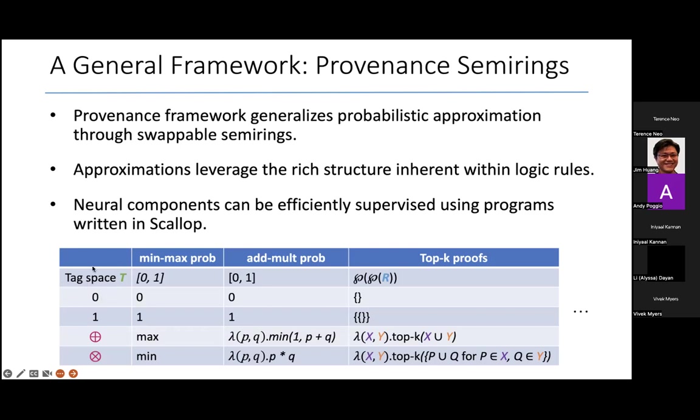I've shown the structure here in the table at the bottom. All you have to define is a tag space T, identity elements 0 and 1, and the operations plus and multiply. There are a few other operations such as negation, which I've omitted here. But if you can define this algebraic structure called a semiring, with certain properties that a semiring has, then you can essentially get these tags computed efficiently for a language like Datalog.